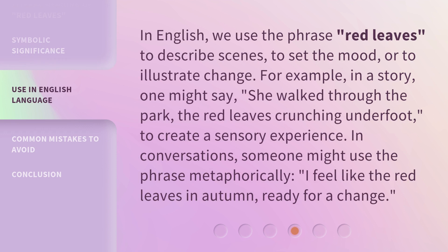In English, we use the phrase 'Red Leaves' to describe scenes, to set the mood, or to illustrate change. For example, in a story, one might say, 'She walked through the park, the red leaves crunching underfoot,' to create a sensory experience. In conversations, someone might use the phrase metaphorically: 'I feel like the red leaves in autumn, ready for a change.'